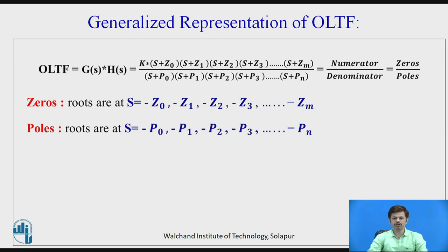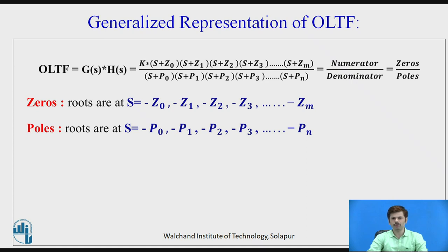The generalized representation of the open loop transfer function can be written as G(S)·H(S) equals K times (S+Z₀)(S+Z₁)···(S+Zₙ) divided by (S+P₀)(S+P₁)···(S+Pₙ). Whatever is present at the numerator those are called as zeros, and whatever is present at the denominator are called as poles.